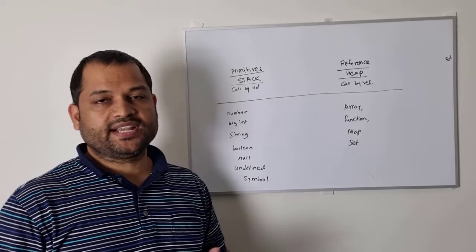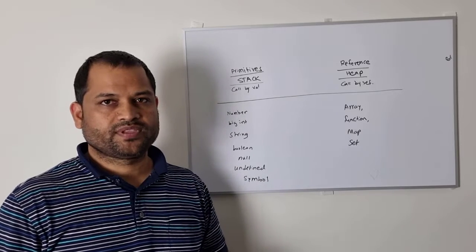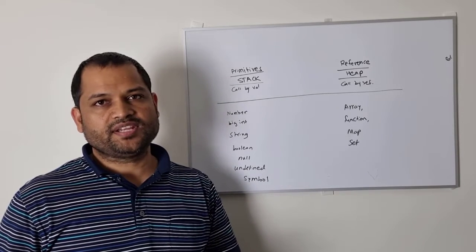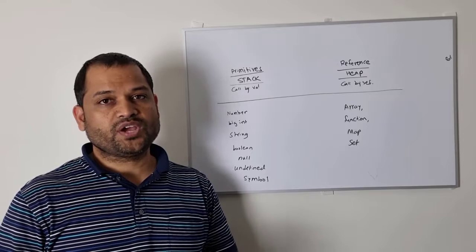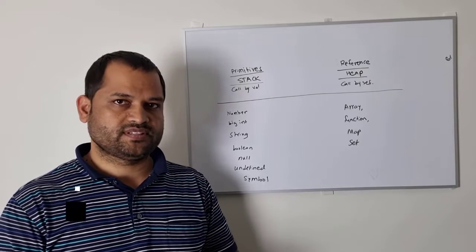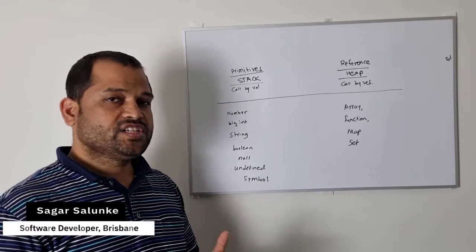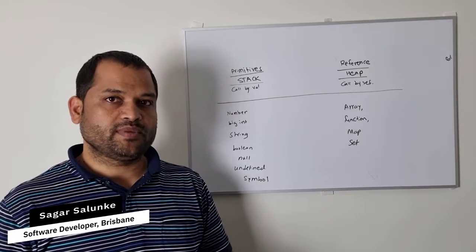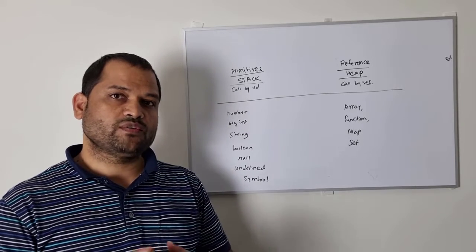In this video, I'll be talking about data types in JavaScript. JavaScript is a dynamically typed language, which means you don't have to define the type of variables. JavaScript will dynamically decide the type of variables depending upon what kind of values you have assigned.